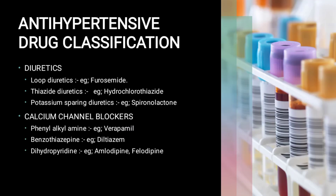Antihypertensive drugs are the drugs used in the treatment of hypertension. A drug used to treat high blood pressure is called an antihypertensive drug. These are drugs used to lower blood pressure in hypertension.